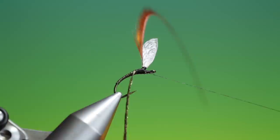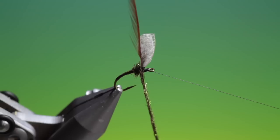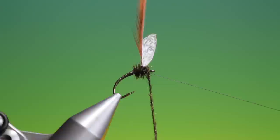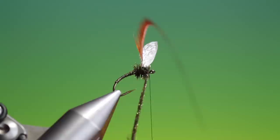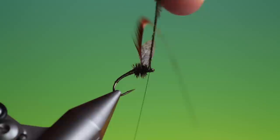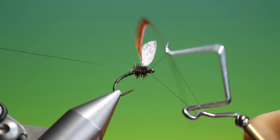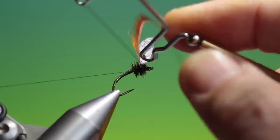Hackle pliers again on my peacock herl. Just wind this forward over the thorax. That's good. Secure that. Tie it off. Remove that. Whip finish.